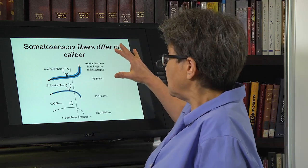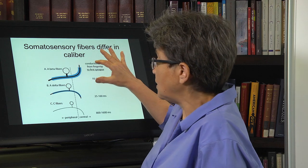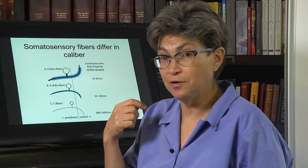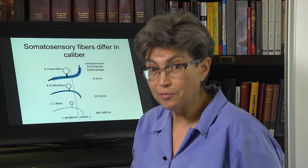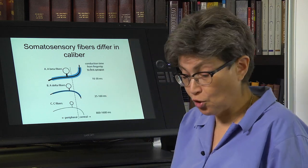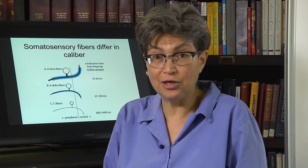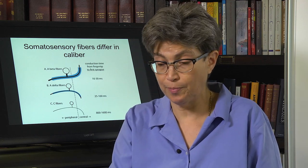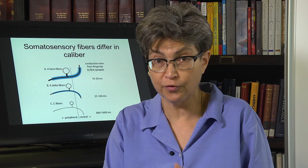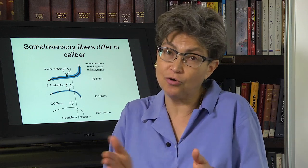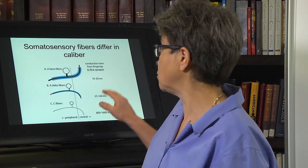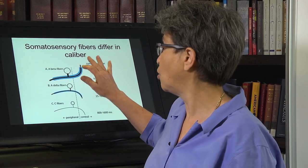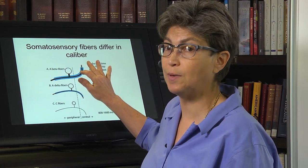The fastest fibers are those involved in movement and motor control. You don't want to fall, and you need to learn about that tree root in your path that you're about to stumble over — you need to learn about that earlier rather than later. So touch, proprioception, and vibration all come in through A-beta fibers.